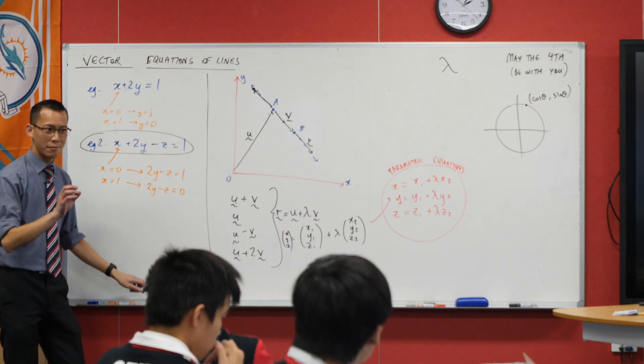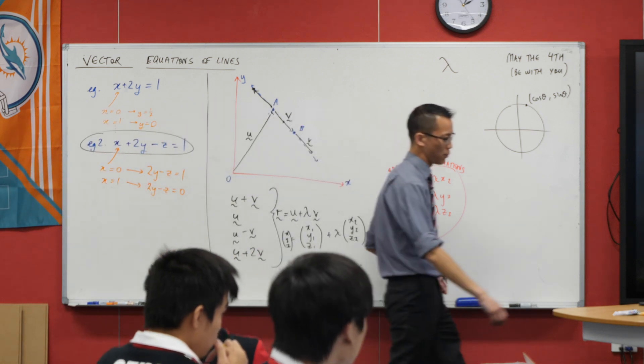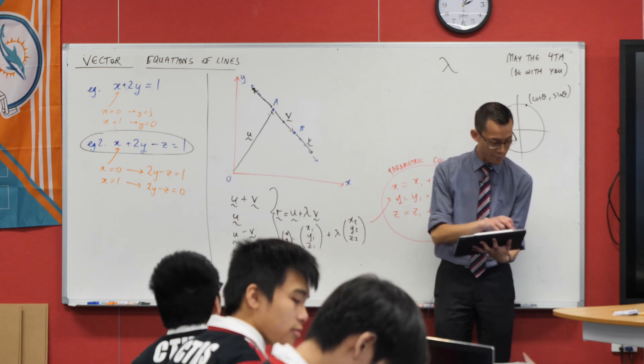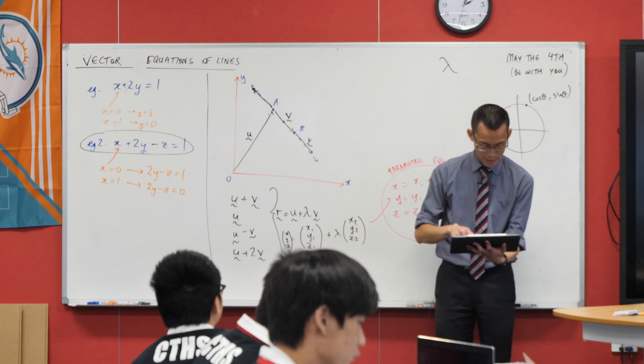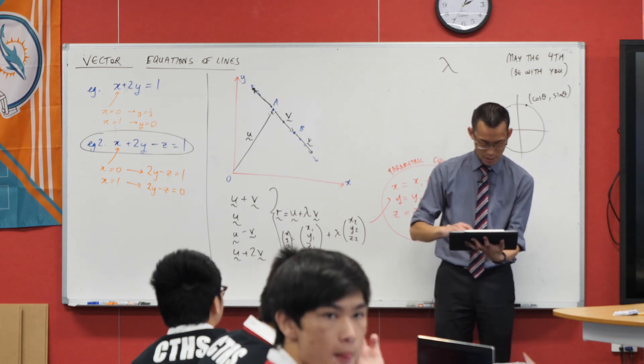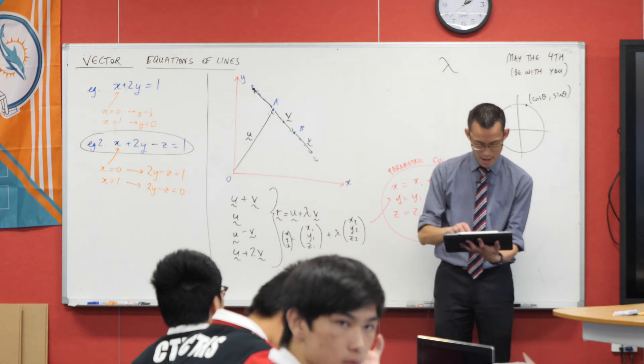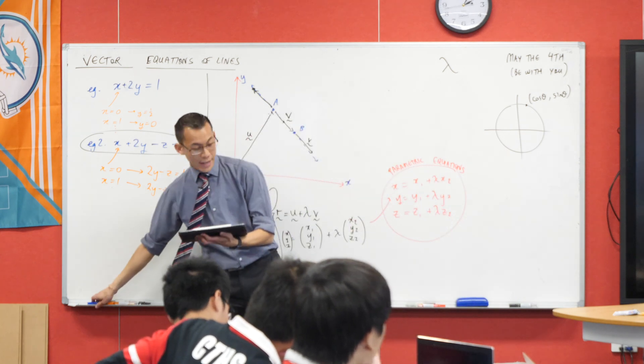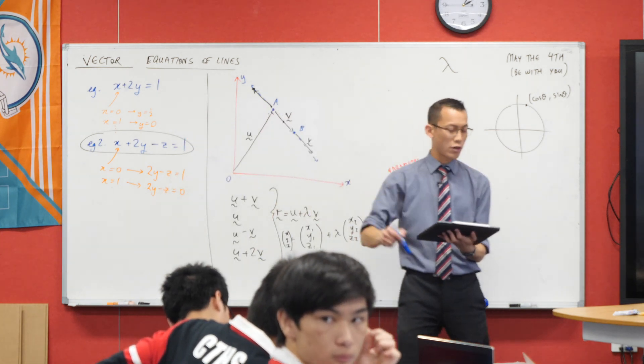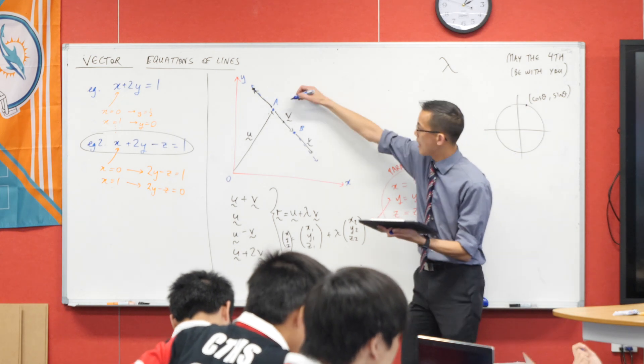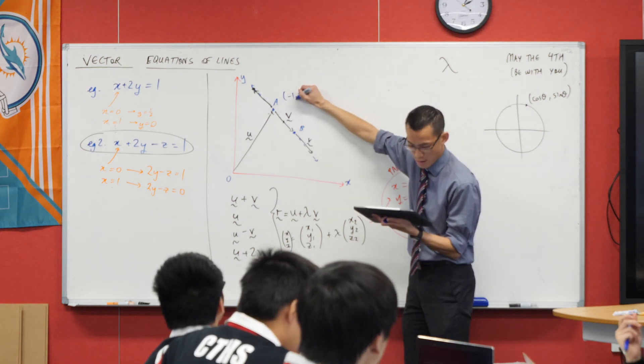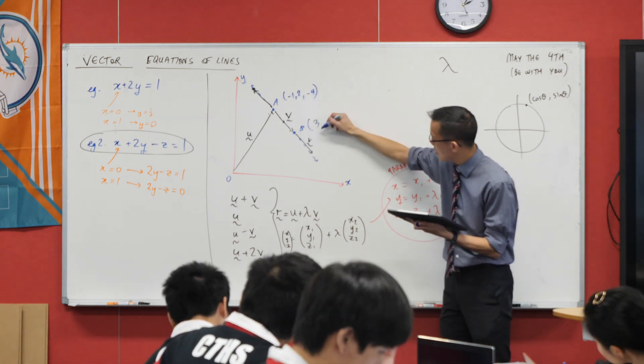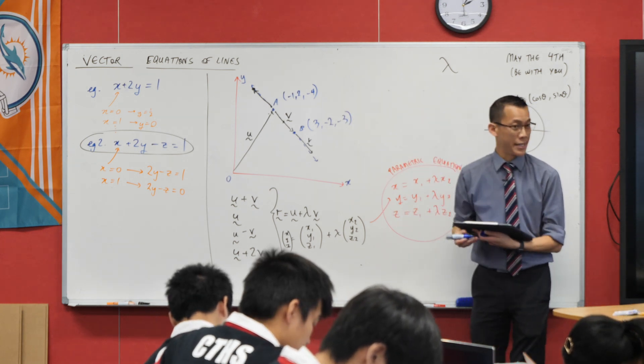Let's see if we can do an example together of finding the equation of some arbitrary set of points. Here's my example. I'm going to give you an A and a B and we're going to see if we can find the vector equation of the line that passes through these two points. So here's my example: A, let's go with negative one, two, negative four, and then for B I'm going to go three, negative two, negative three.